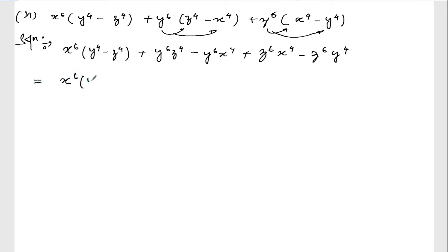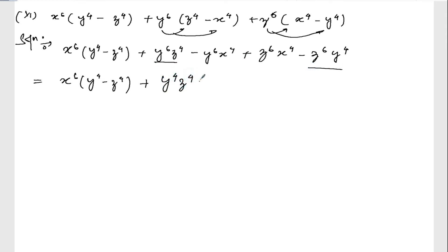Now we have x to the power 6 into y to the power 4 minus z to the power 4. We need to take common factors. From y to the power 4 minus z to the power 4, taking y to the power 4 common and z to the power 4 common — what is left out is y squared from the first term, and z squared from the second term.